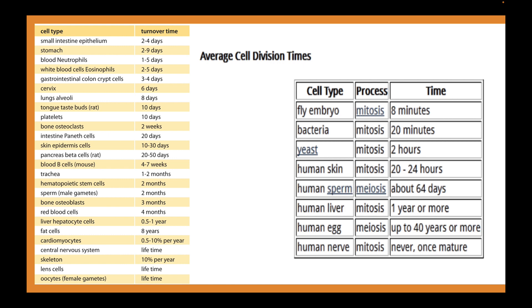Here's a table showing different cell types and their turnover time — how often new cells are produced. Small intestine epithelium produces new cells every 2 to 4 days, stomach every 2 to 4 days, blood neutrophils every 1 to 5 days. Some cells last quite a while — two weeks, one to two months, up to four months. Central nervous system cells never divide; they last a lifetime. Similarly, lens cells and oocytes last a lifetime.